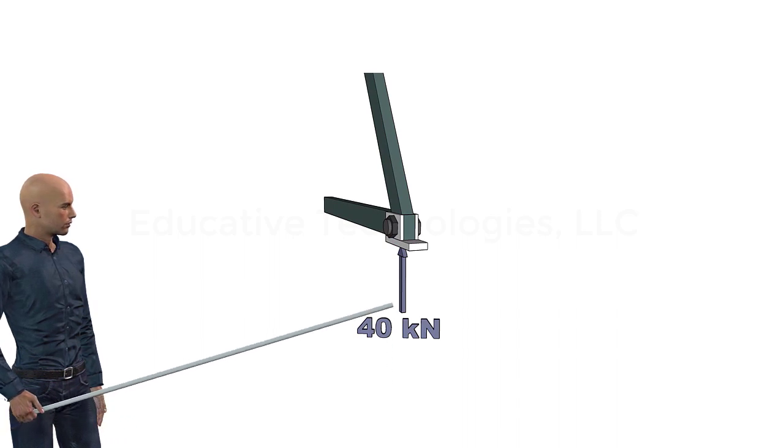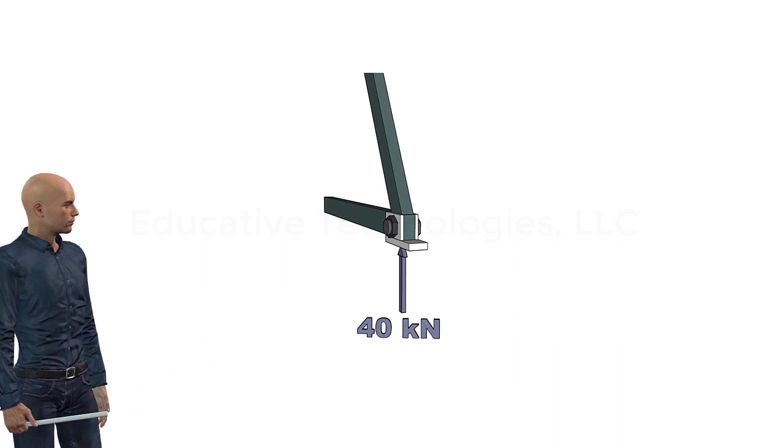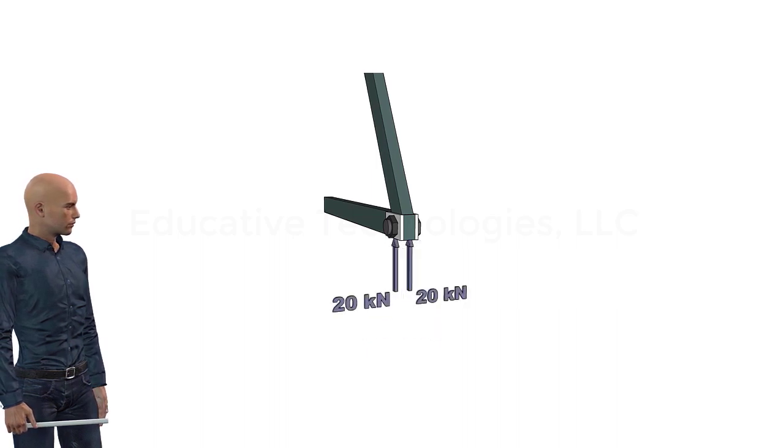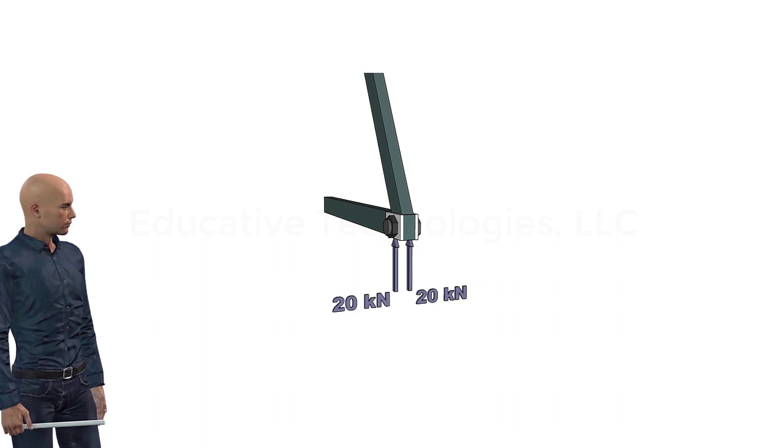Also, notice how the steel bolt connects the truss to the bracket, enabling the former to transmit its load to the latter. We can see that the 40 kilonewtons support reaction at the joint is distributed equally between the two parallel plates forming the bracket.